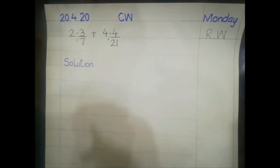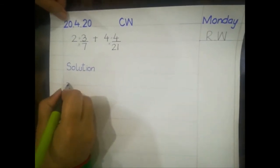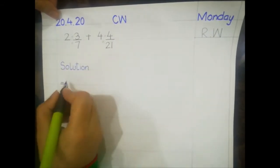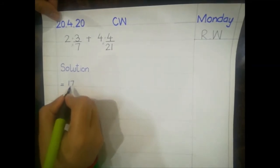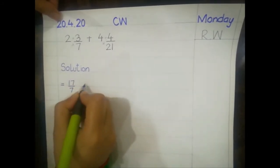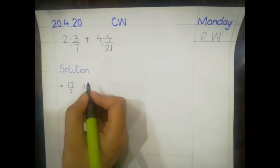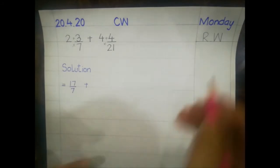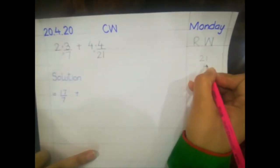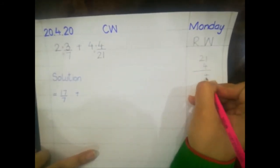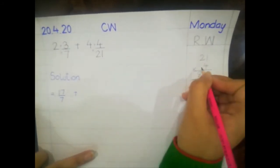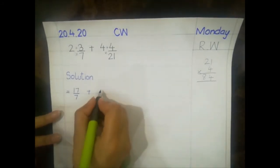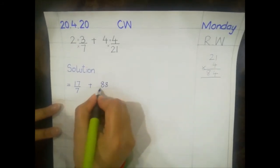Now converting the mixed numbers: for 2 whole 3 by 7 — 7 times 2 is 14, plus 3 is 17, giving 17 by 7. For 4 whole 4 by 21 — we multiply 21 by 4 in rough work: 4 times 1 is 4, 4 times 2 is 8, so 21 times 4 is 84. Then 84 plus 4 is 88, giving 88 by 21. We have now changed both mixed numbers into improper fractions.